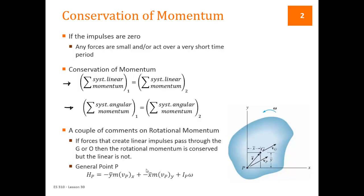For a general point you can write the angular momentum as the IP, so the moment of inertia at that point, times omega, plus a distance in the y direction times a linear momentum in the x direction, plus a distance in the x direction times a linear momentum in the y direction.